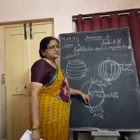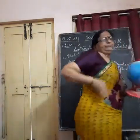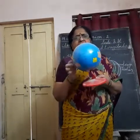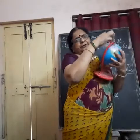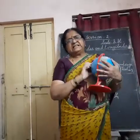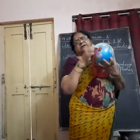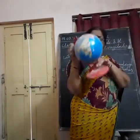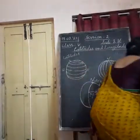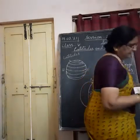The axis is the imaginary line around which the earth rotates. The earth is rotating like this. This line which joins the earth at the top and at the bottom is called the axis of the earth. The point at the top where the axis starts is called the north pole, and the point at the bottom where it ends is called the south pole. North pole and south pole are the two poles.